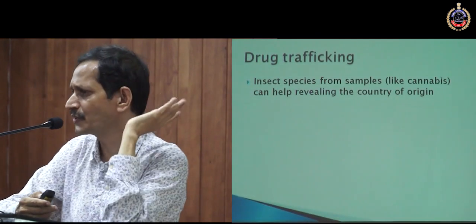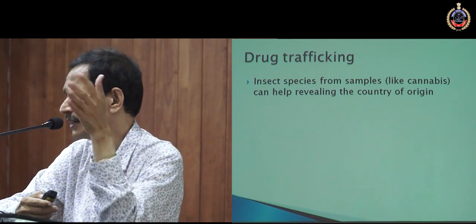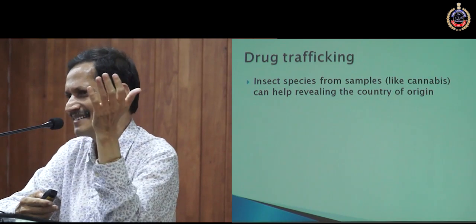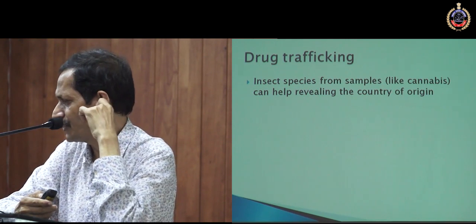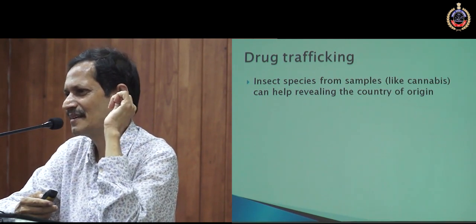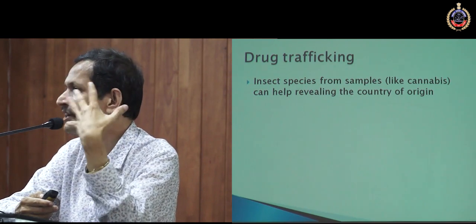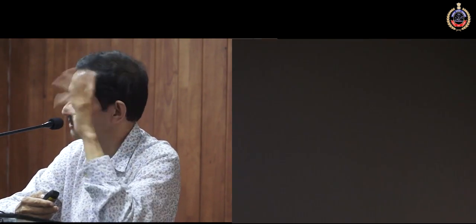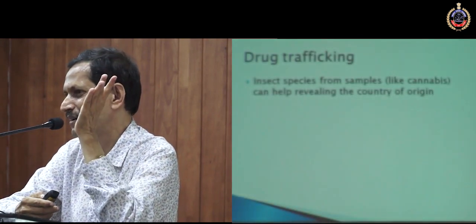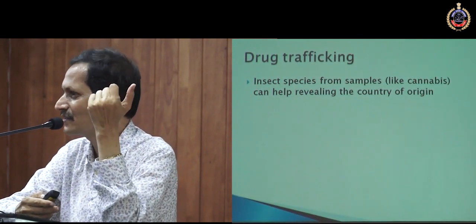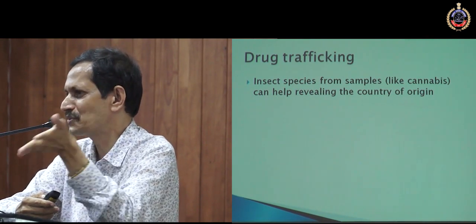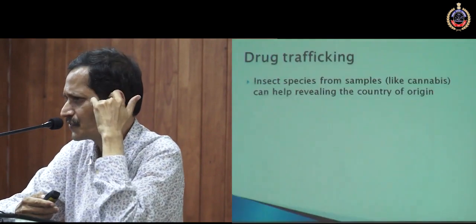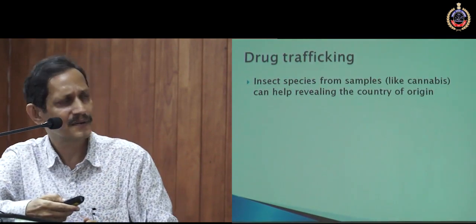Drug trafficking is also part of medical-legal forensic entomology. Suppose samples of cannabis or ganja are confiscated. On examination you get some insects. Insects are geographically totally different — insects found in India you may not see in Afghanistan. So if you get a species from Afghanistan, that means it originated there. If you are also getting species from Pakistan, that means it started in Afghanistan and came through Pakistan. That kind of evidence can be drawn using forensic entomology.